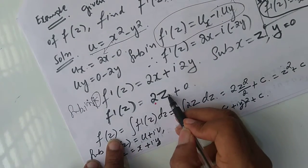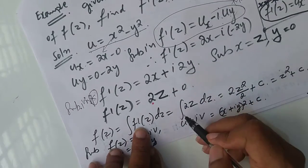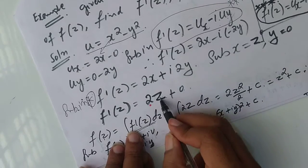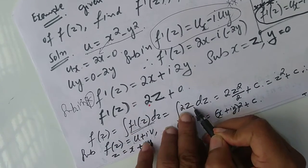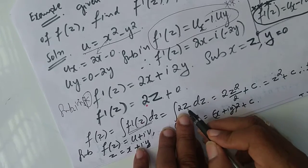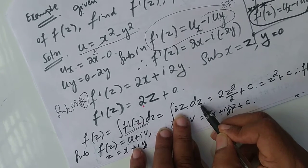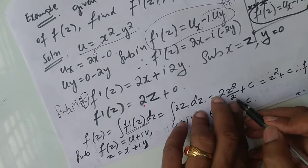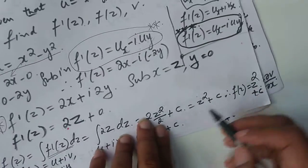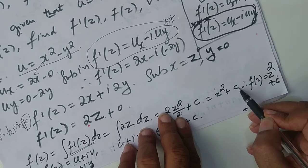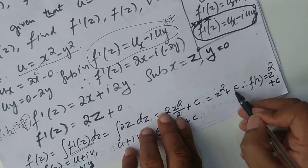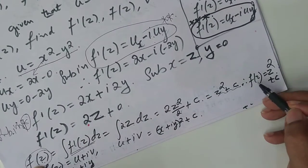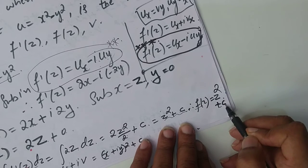Now f(z) means integral of f'(z). Integral of f'(z) means integral of 2z dz. This is similar to integral of 2x dx, which gives 2x²/2. In the same way, integral of 2z dz = 2z²/2 + c. The 2's cancel, so f(z) = z² + c.